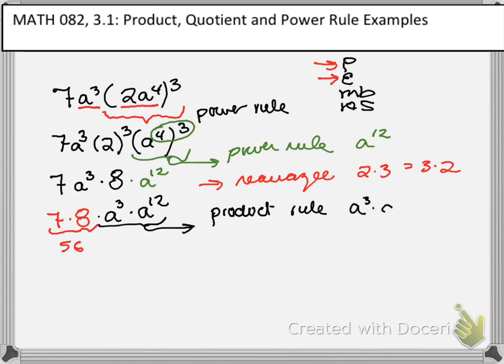And remember, the product rule says that if I have something like this, same base, then I can simply add my exponents together. So that gives me a to the 15th power.